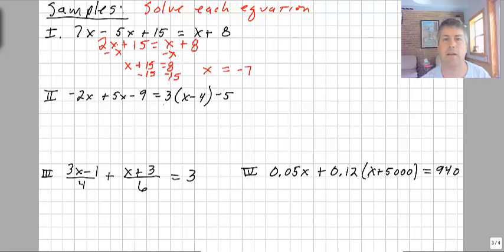X equals 3 times the quantity x minus 4 minus 5. On the left hand side, I can combine my like terms. It looks like I'm going to get 3x minus 9 equals. And here I'm going to go ahead and distribute the 3 in. And I'm going to get 3x minus 12 minus 5. Let's combine our 3x's. I'm going to subtract 3x from this side and subtract 3x from this side. 3x minus 3x, that's 0x.